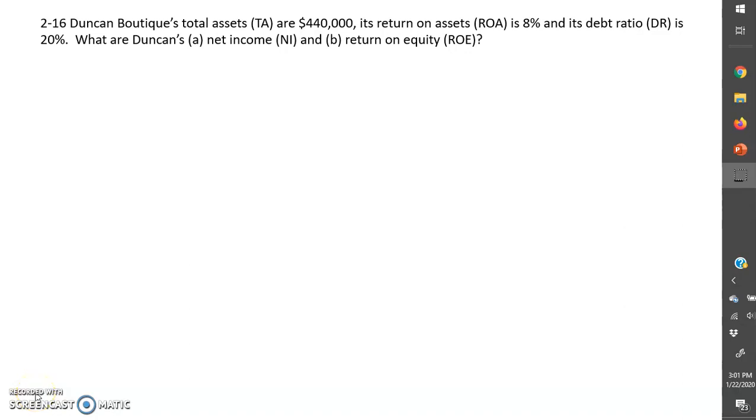Okay, this is CFN 6 Chapter 2 Problem 16. Duncan Boutique's total assets are $440,000, its return on assets is 8%, and its debt ratio is 20%. What are Duncan's net income and return on equity?